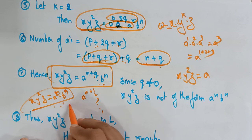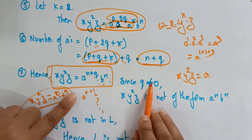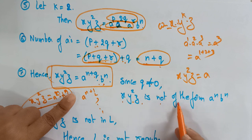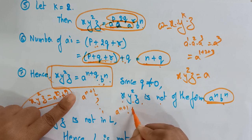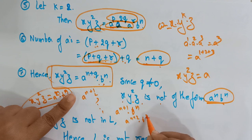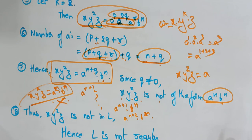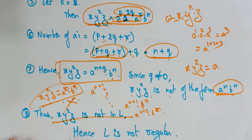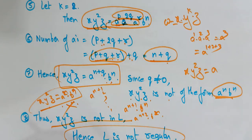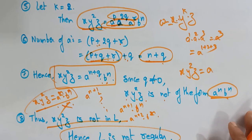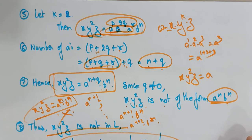Since Q ≠ 0, XY²Z is not of the form aᴺbᴺ. It is in the form aᴺ⁺¹bᴺ or aᴺ⁺²bᴺ, and so on — not in the aᴺbᴺ form. Therefore XY²Z is not in language L. Hence L is not regular. Take the contradiction and prove that L is not a regular language. This is how you check whether a language is regular or not by using the pumping lemma. Thank you.